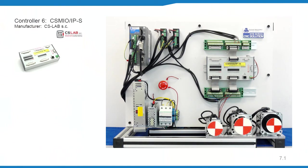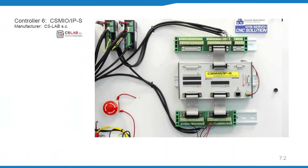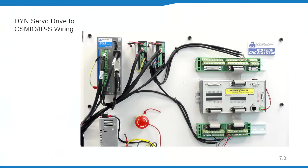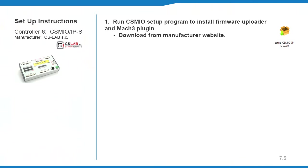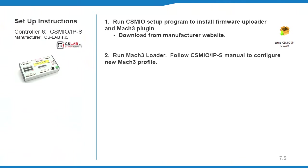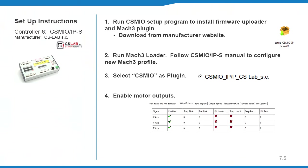The IPS is a comprehensive step and direction motion controller. Connect the IPS to the PC and servo drives, then power up using a 24V power supply. The DYN2 and DYN4 servo drives should be wired to the IPS as specified. Follow the manufacturer's instructions for detailed setup with your PC. Download and run the IPS setup program to install the firmware, upload, and Mach 3 plugin. Run Mach 3 loader and follow the IPS controller manual to configure a new profile. At the plugin screen, select the IPS controller. Go into configuration, ports and pins, motor outputs tab, and enable the XYZ axis outputs, then reset to complete.